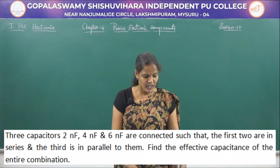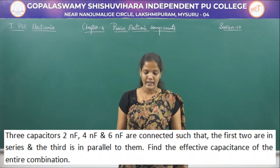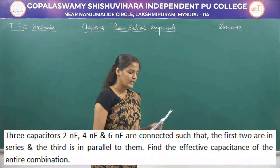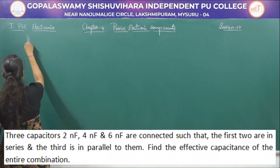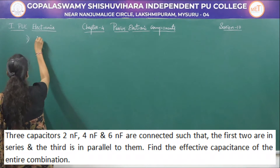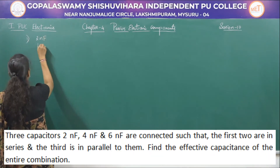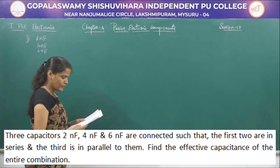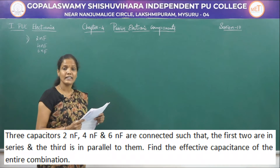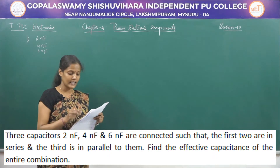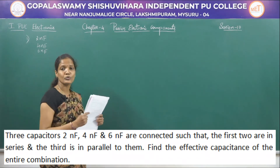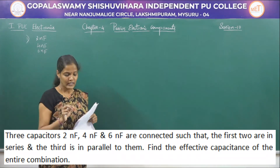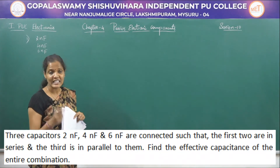Let's begin with the very first problem. Three capacitors of 2 nanofarad, 4 nanofarad, and 6 nanofarad are connected such that the first two are in series and the third is in parallel to them. So we have 3 capacitors whose values are 2, 4, and 6 nanofarad, and the first two are connected in series.